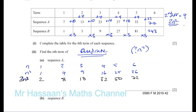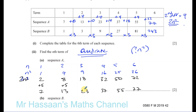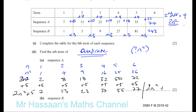Now I'm going to write down the actual sequence we have: 7, 13, 23, 37, 55, 77. Then I'm going to think: what do I have to do to get from 2n squared to our sequence? Each time: 2 plus 5 is 7, 8 plus 5 is 13, 18 plus 5 is 23, 32 plus 5 is 37, 50 plus 5 is 55, 72 plus 5 is 77. So it's going to be a plus 5 — the sequence is 2n squared plus 5.